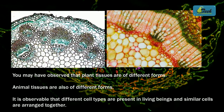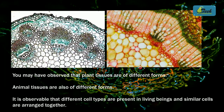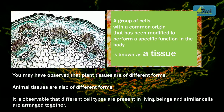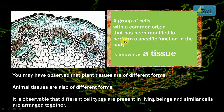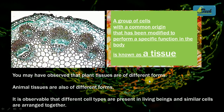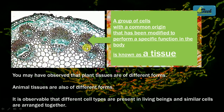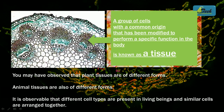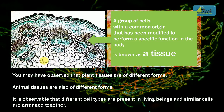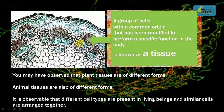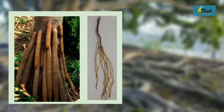A group of cells with a common origin that has been modified to perform a specific function in the body is known as a tissue. Don't worry about memorizing it right away — after the next five to six minutes you will understand what it is all about.